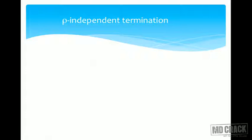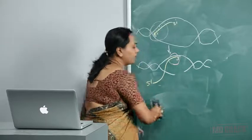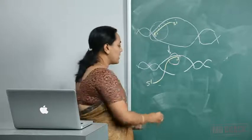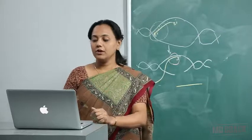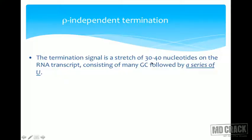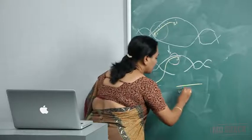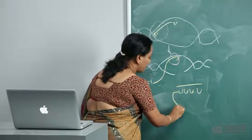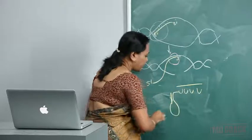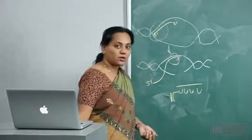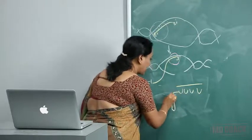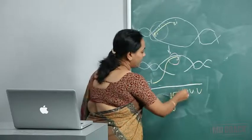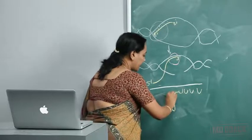In rho-independent termination, the termination signal is a stretch of around 30 to 40 nucleotides on the RNA transcript. This consists of many GC molecules followed by a series of U's. When so many U's are present, a hairpin-like structure is formed on the RNA transcript. On the DNA there is a sequence rich in GC, and when the RNA transcript forms in this region, a hairpin loop is formed followed by U's.